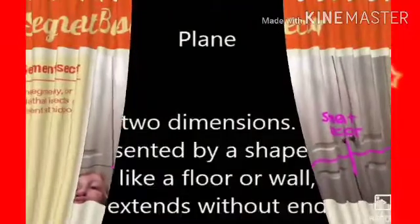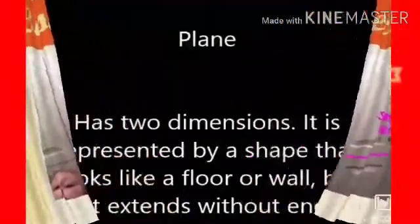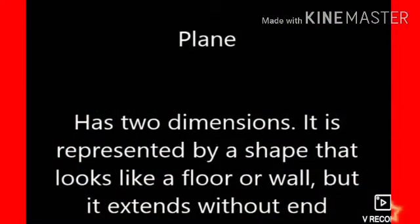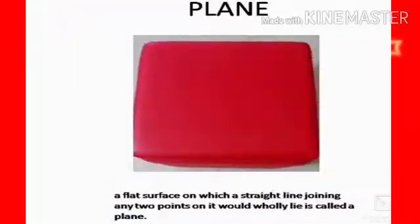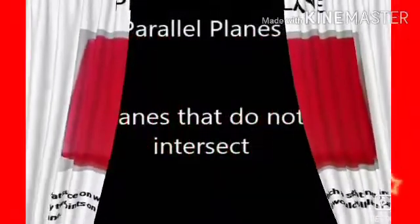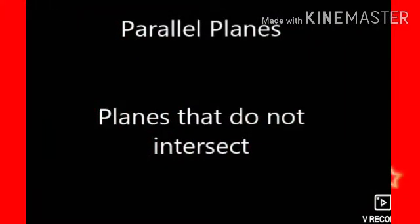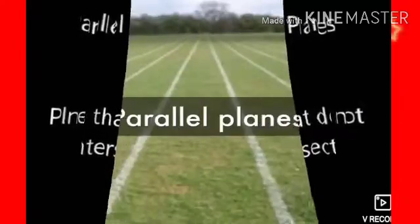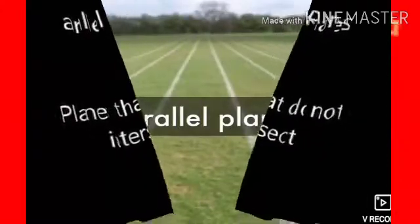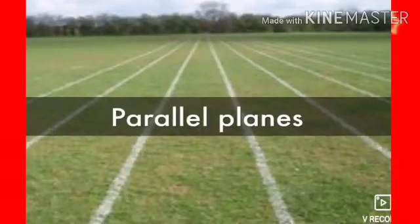A plane has two dimensions. It is represented by a shape that looks like a floor or wall, but it extends without end. There are also parallel planes — planes that do not intersect.